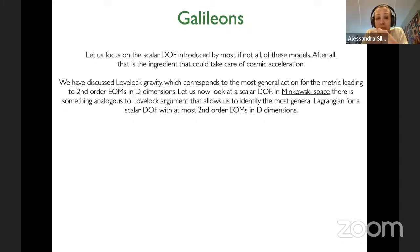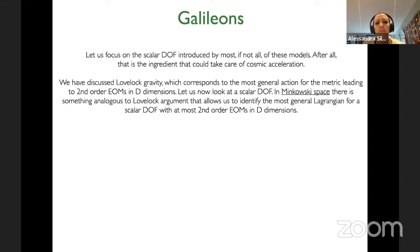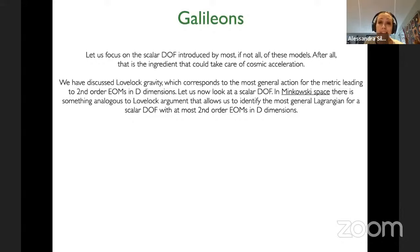Then came Galileans — scalar-tensor theories that are richer, containing more than just a standard kinetic term, non-minimal coupling, and potential. They contain, in particular, self-derivative couplings of the scalar field. Overall, the result is still a massless graviton and a scalar field, both with second-order equations of motion.